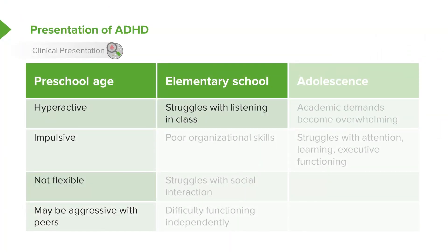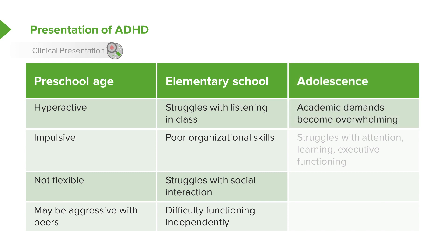In the elementary school era, these children start to struggle with listening in class, have poor organizational skills, struggle with social interaction, and may have difficulty functioning independently. As adolescents, they have problems with academic demands. As high school begins and academic responsibilities increase, they can really start to struggle with attention, learning, and even executive functioning.